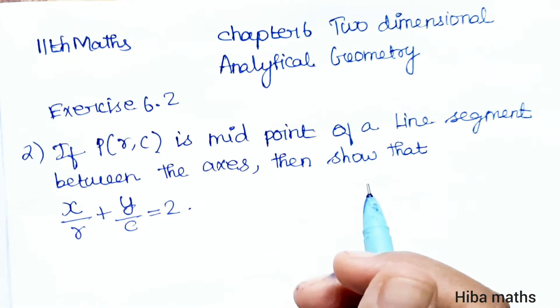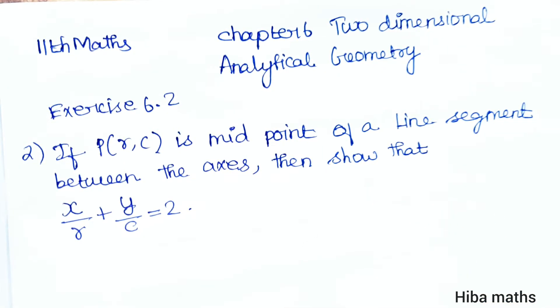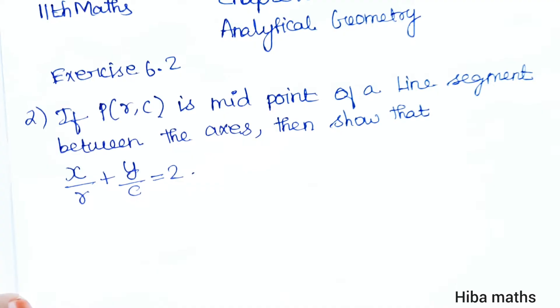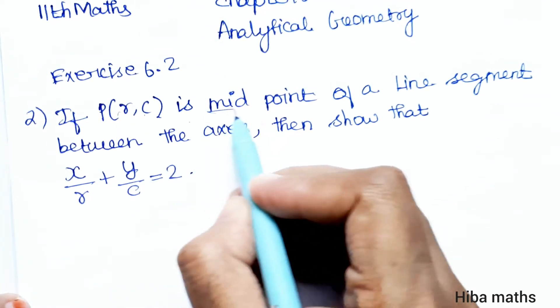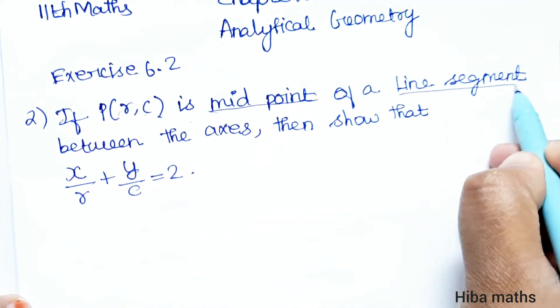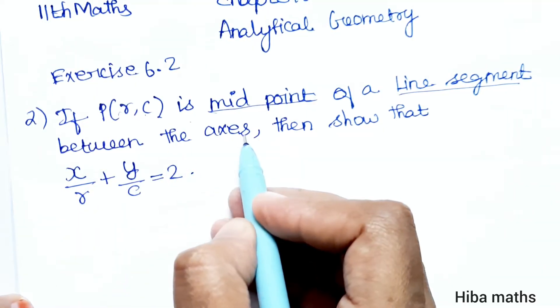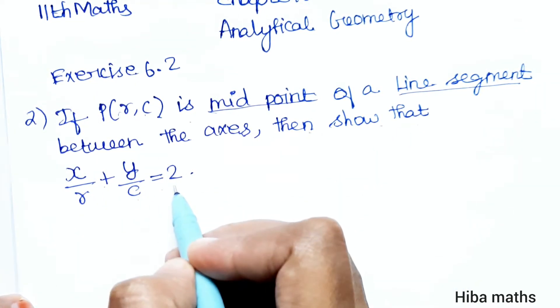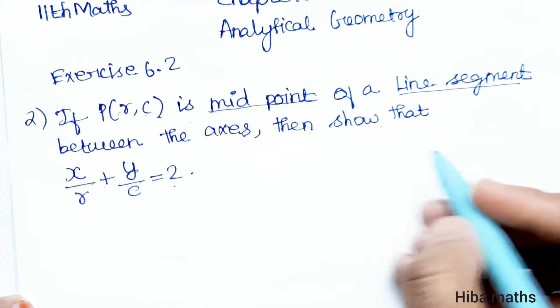Hello students, welcome to Hiba Maths, 11th standard maths, Chapter 6 two-dimensional analytical geometry, Exercise 6.2, second question. If P of (r,c) is midpoint of a line segment between the axes, then show that x by r plus y by c is equal to 2.